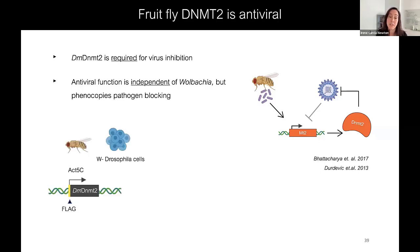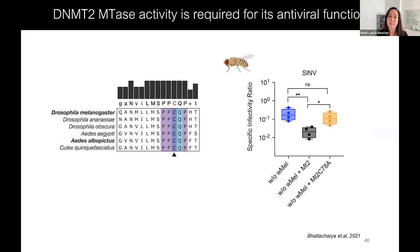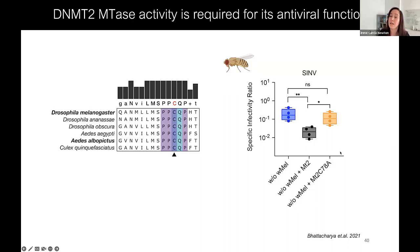We now know that MT2 is antiviral, is required for virus inhibition, and its antiviral function is independent of Wolbachia but phenocopies pathogen blocking. If we flag-tag DNMT2 and drive its expression in Drosophila cells without Wolbachia, we see specific infectivity of the virus drop, suggesting MT2 alone can have a protective antiviral effect. We also know that this protective effect is dependent on the catalytic activity of this methyltransferase — mutating the conserved cysteine residue in the catalytic site abrogates the protective effect.